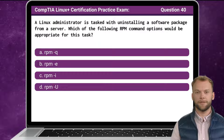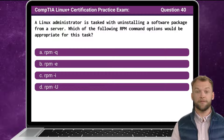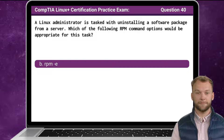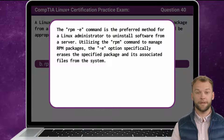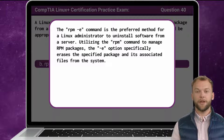Question 40. A Linux administrator is tasked with uninstalling a software package from a server. Which of the following RPM command options would be appropriate for this task? The answer is B, RPM -e. The RPM -e command is the preferred method for a Linux administrator to uninstall software from a server. Utilizing the RPM command to manage RPM packages, the -e option specifically erases the specified package and its associated files from the system.